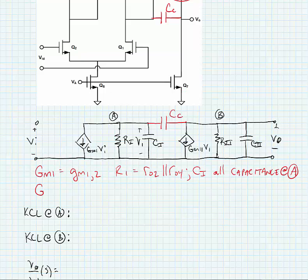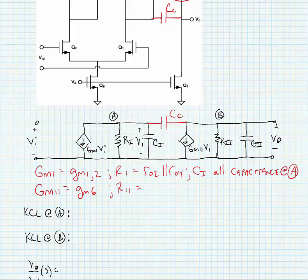Of course, GM2 is equal to little gm6. R-i is equal to R-O-6 in parallel with R-O-7. And C-i is all capacitance at node B, or the output node, and this might include a load capacitance. So we haven't drawn a load capacitance in this circuit, but we need to know that it might be there.